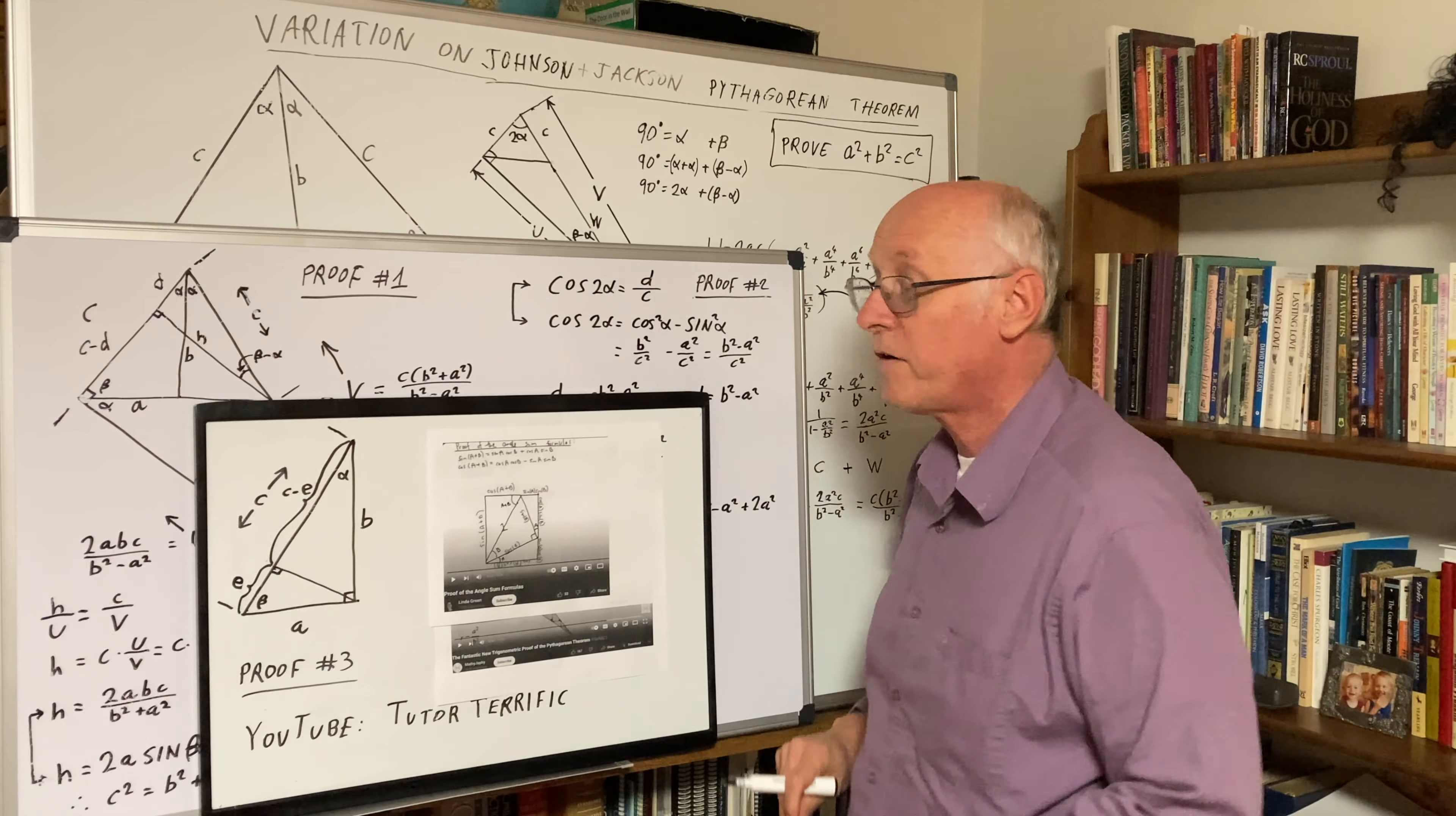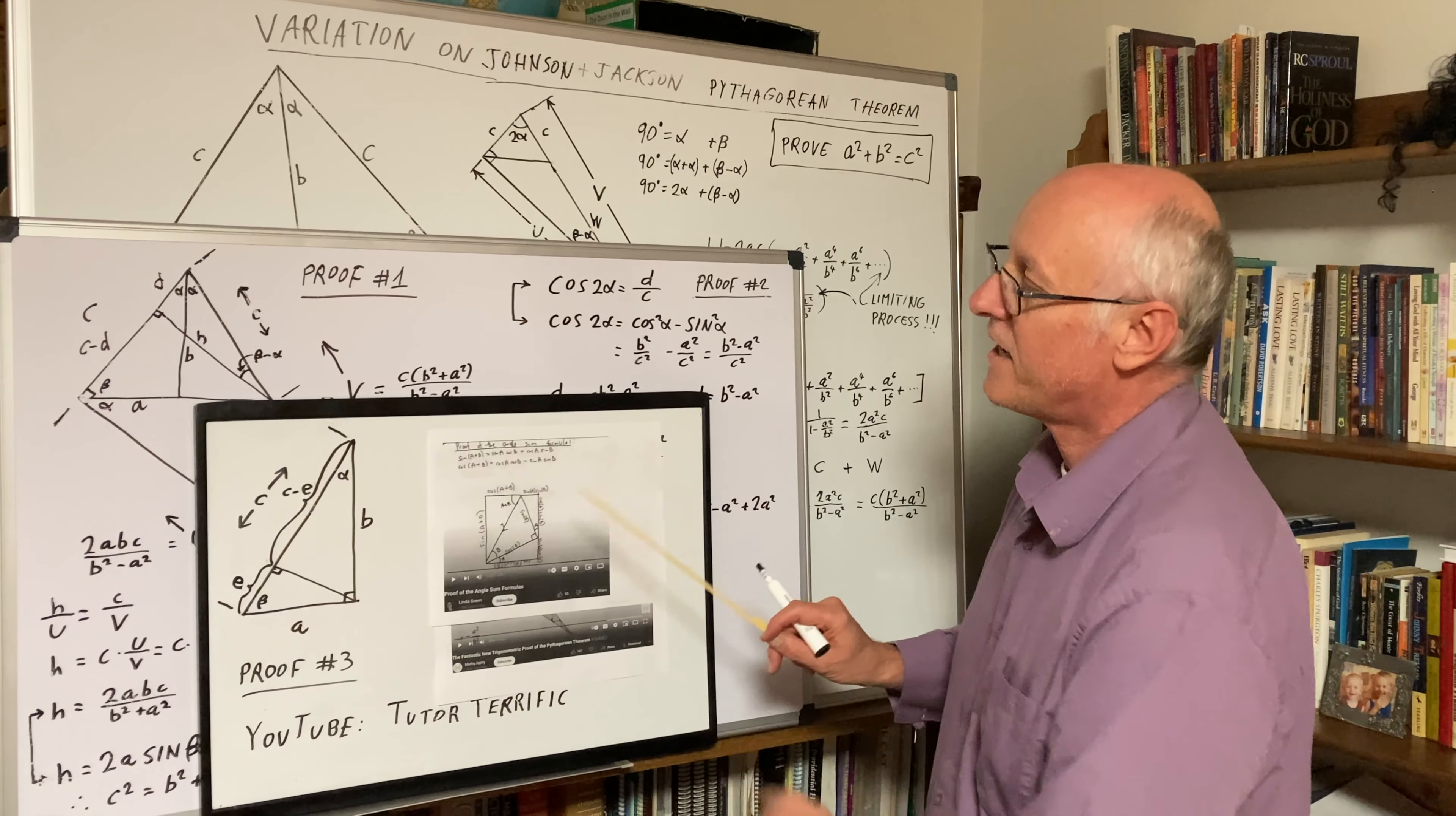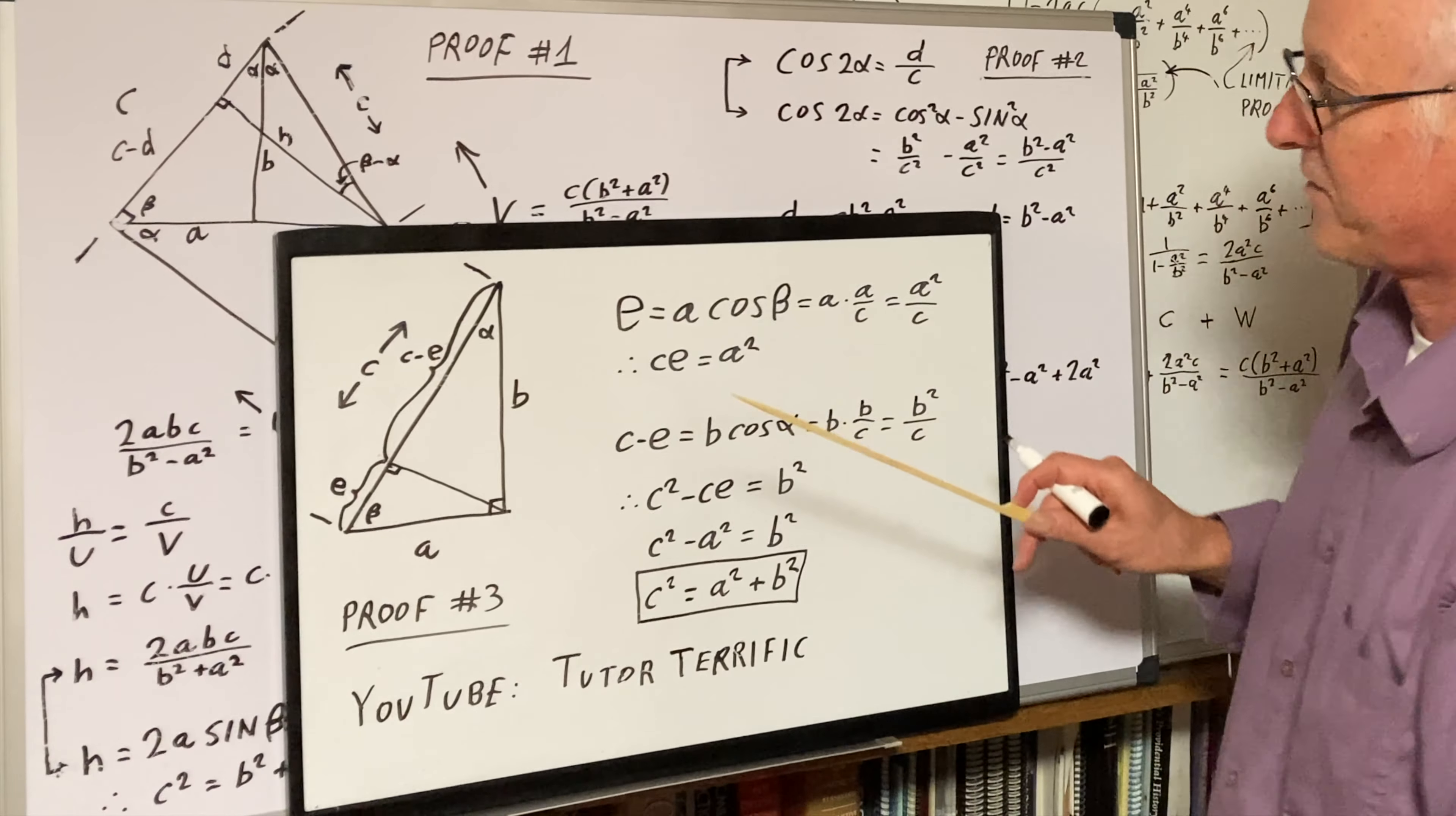Here is proof number three by YouTuber Tutor Terrific. There we simplify matters even more. We start out with our basic ABC right angle and go from there. This has to be probably the simplest trigonometric proof.